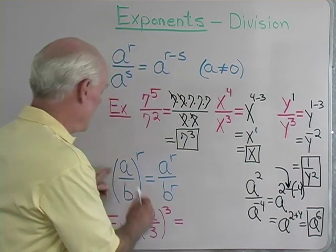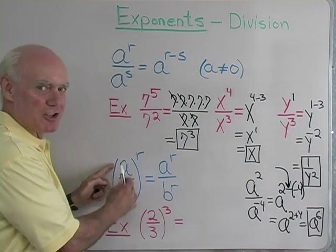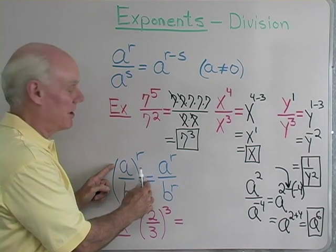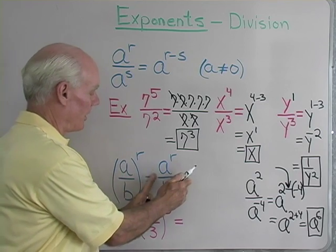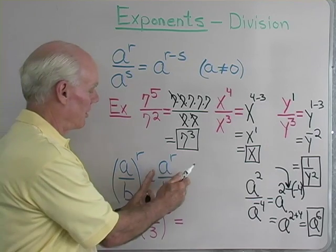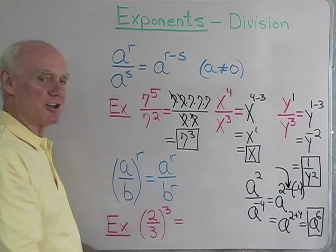Okay, one more property. a over b, a fraction like this raised to the r power, is a to the r divided by b to the r. So if you have something in this form and you want to write it like this, you can. If you have something in this form and you want to write it like this, you can.